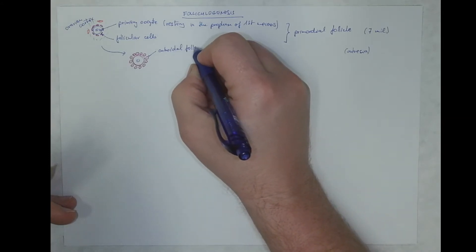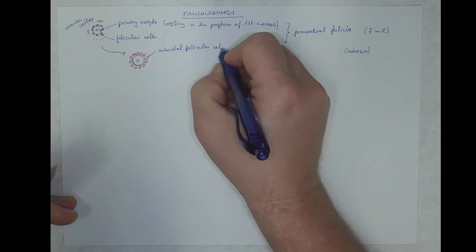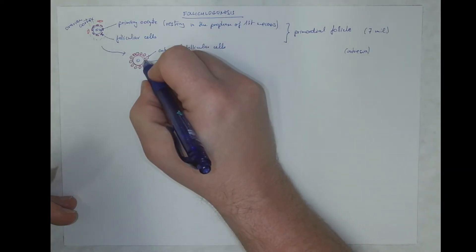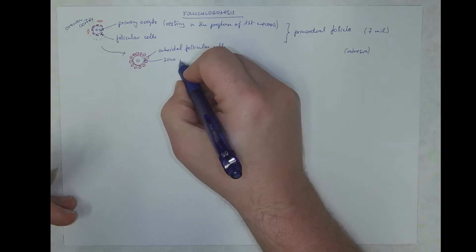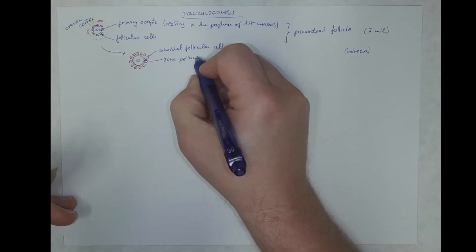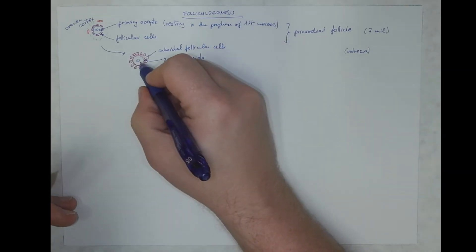So we have follicular cells, a thin zona pellucida made of glycoproteins, and of course the oocyte.